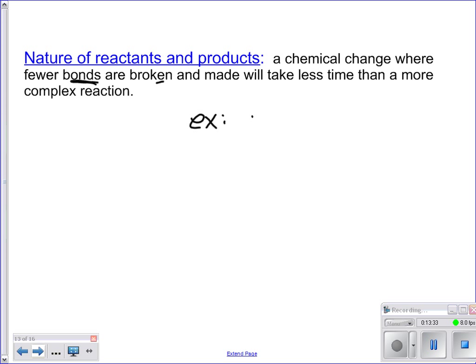We could look at the bonds that must be created or broken in these molecules. So for example, if you had something like, let's just do a real simple organic compound. If you have methane compared to pentane. If you've got these two, in this case, this is going to take longer. So this is slower. And this one would be faster because of the number of bonds that you have. Or if you have more complex bonds, triple bonds, things like that, you would expect that to be slower. So again, it says a chemical change where fewer bonds are broken and made will take less time, will be faster than those more complex molecules.